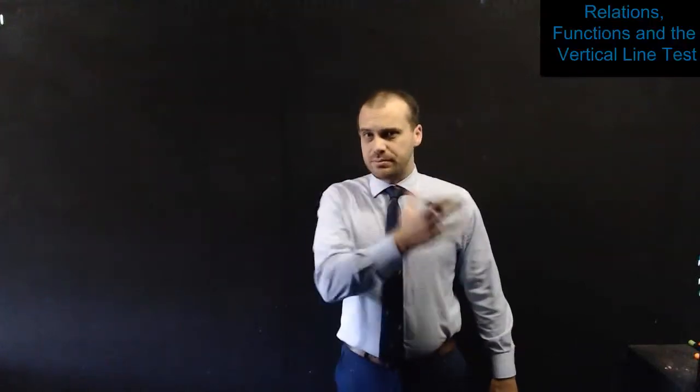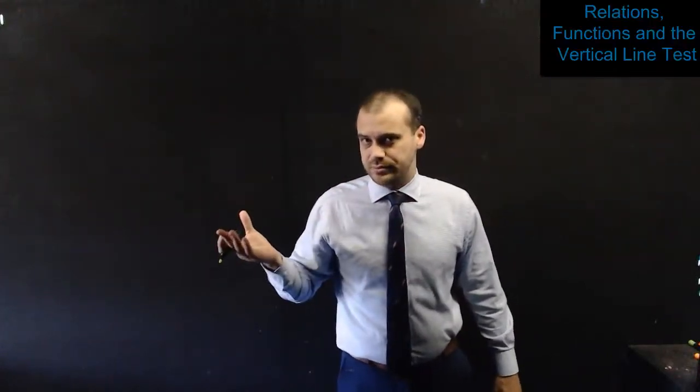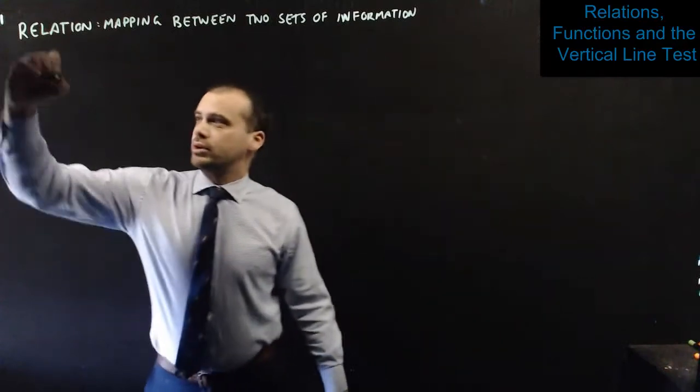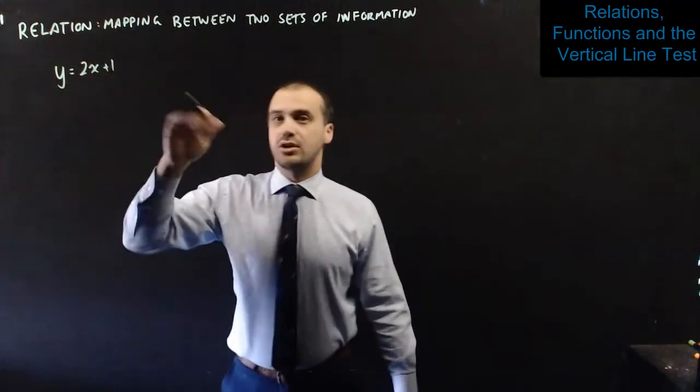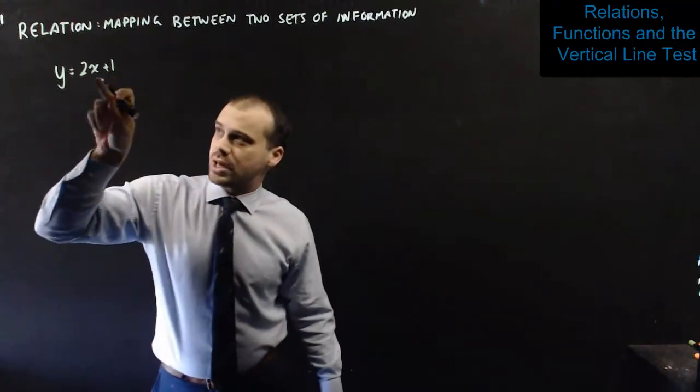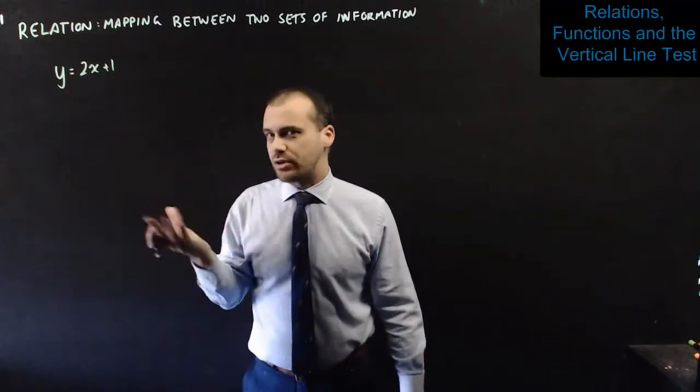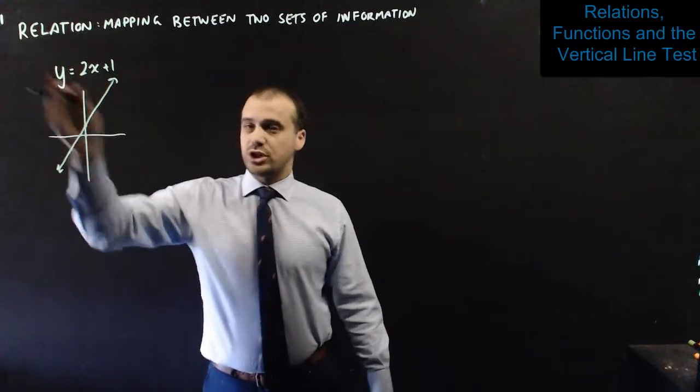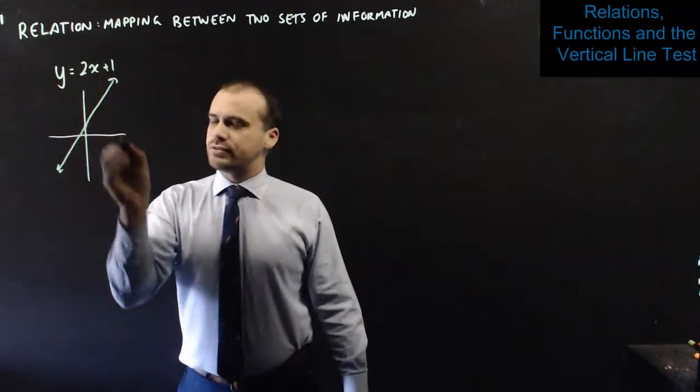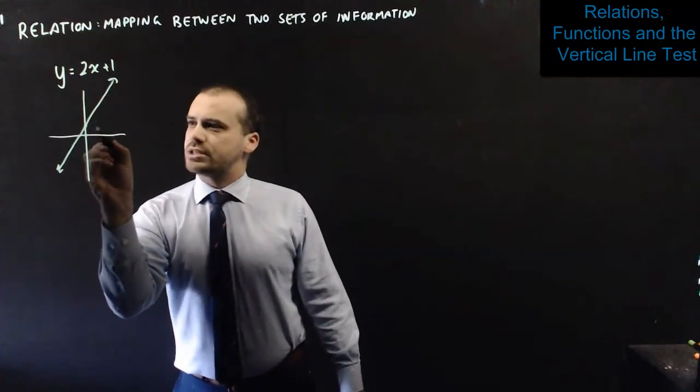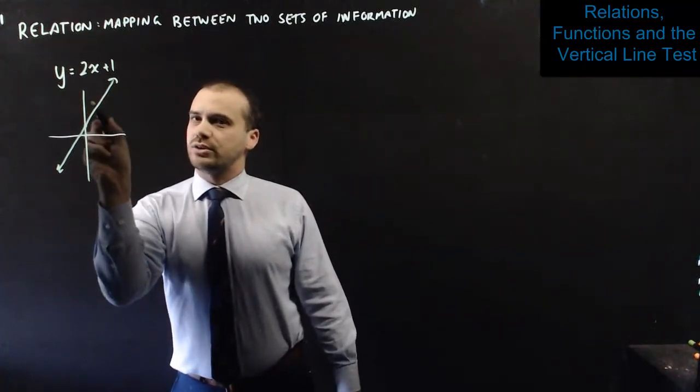A relation is just a mapping between two sets of information, and you've dealt with relations before. Something like y equals 2x plus 1 is a relation. It's a mapping between x and y, and we can graph it. These are two ways of showing the same information. The equation y equals 2x plus 1 and this graph both give us that information. If I know an x value, I can find that y value.